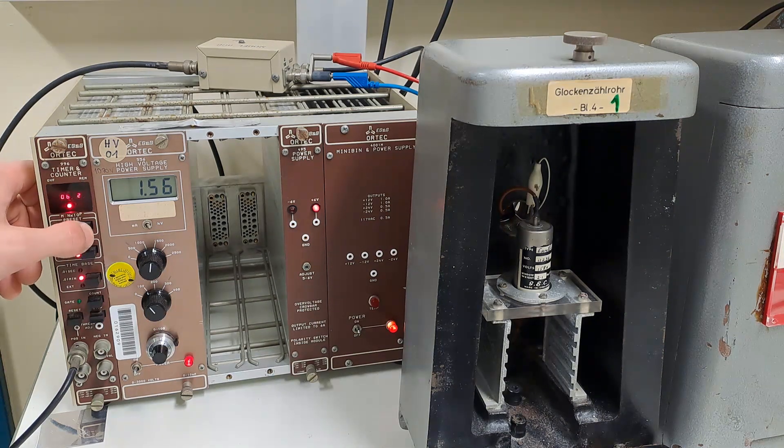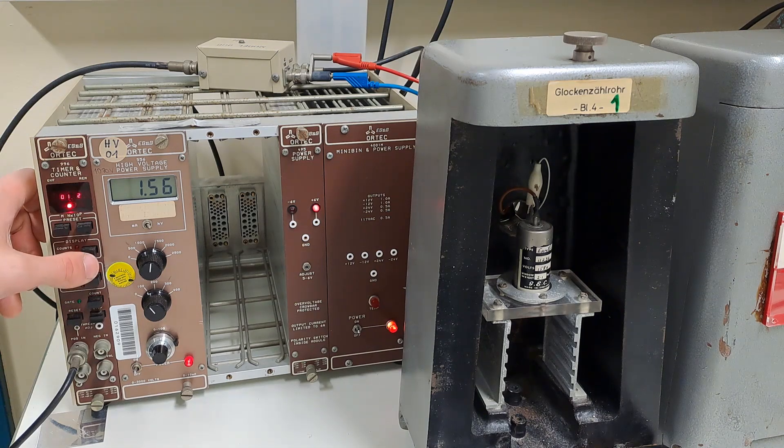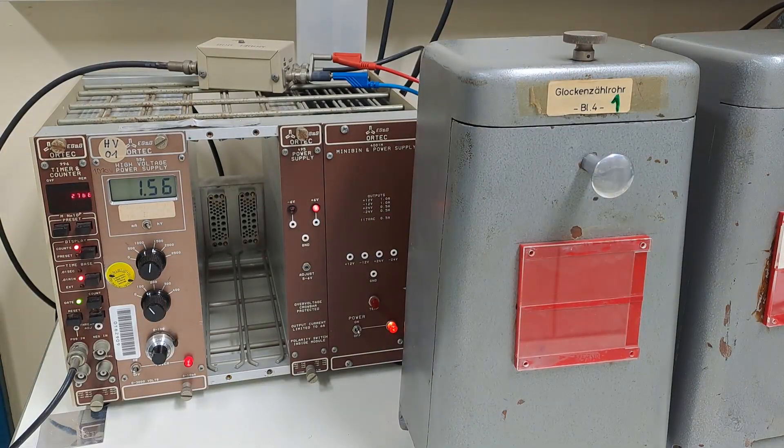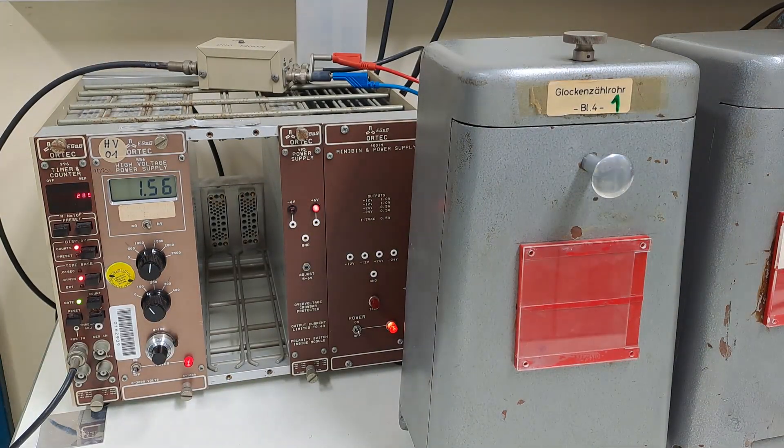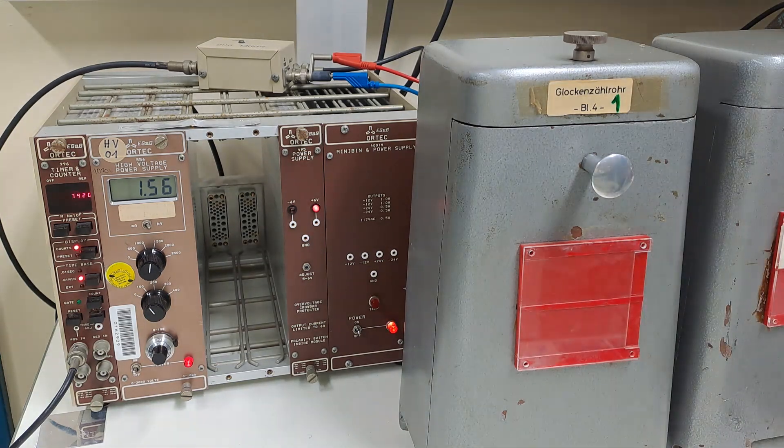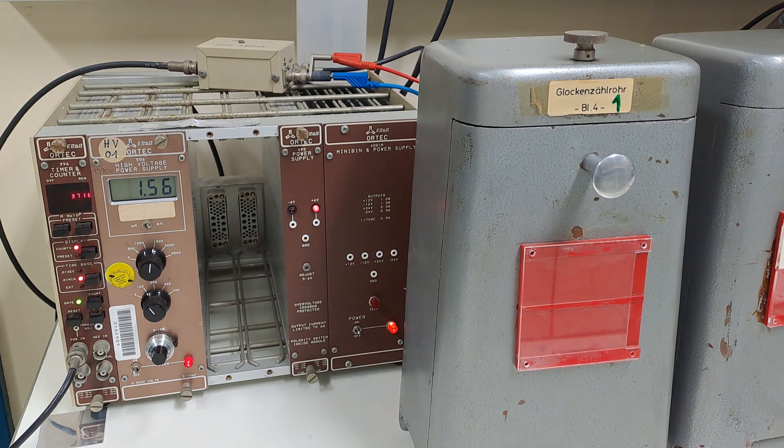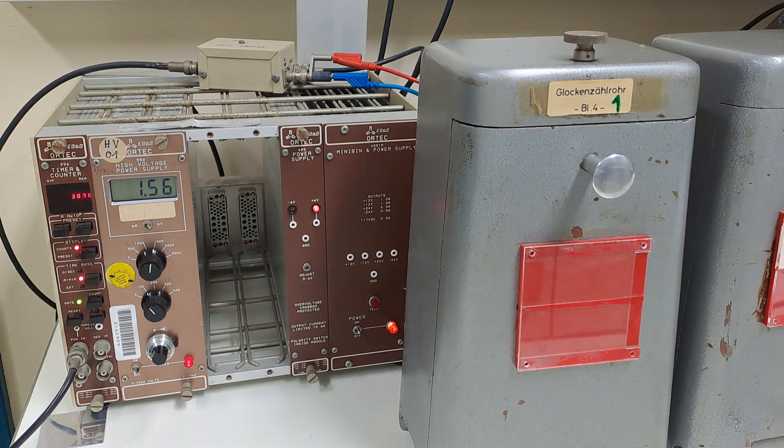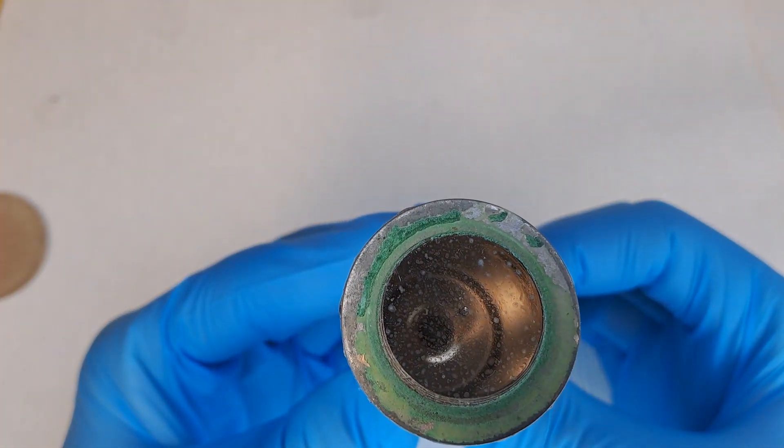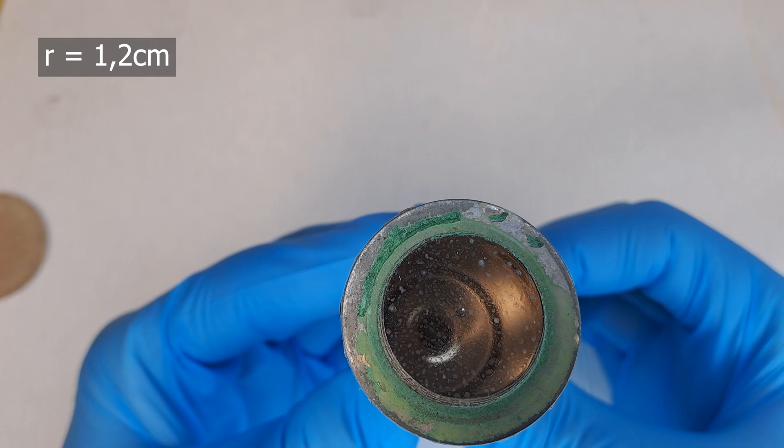The procedure is quite simple. You measure a CS137 standard sample for one minute three times in each position. Each position is measured three times to average the results for better counting statistics. You also measure the distance from the sample to the detector and the diameter of the detector, which is 2.5 centimeters. So the radius is 1.2 centimeters, which is more useful.